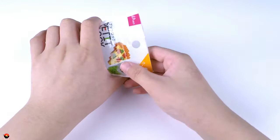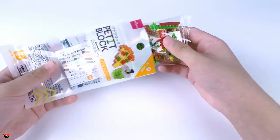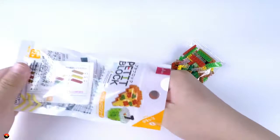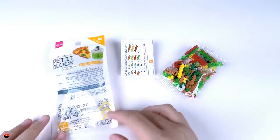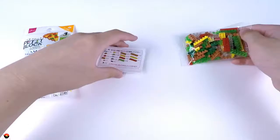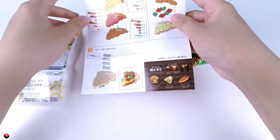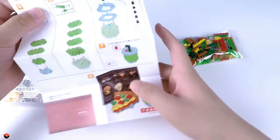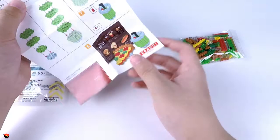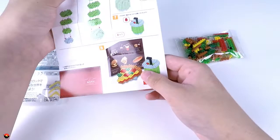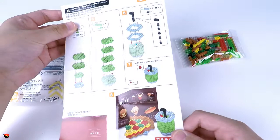With these Daiso petite blocks, they always come in these little resealable bags, and I really like to collect them. Included in the bag we have our instructions and our bag of bricks. It looks like we can complete this in about seven steps, and the eighth one is to show that it is complete. With some of their newer kits, they're starting to have these little things that you can cut out, so it looks like we have a food menu that can go along with our pizza and melon soda.